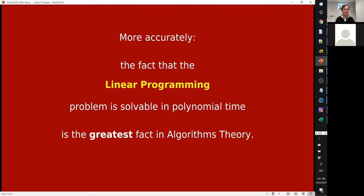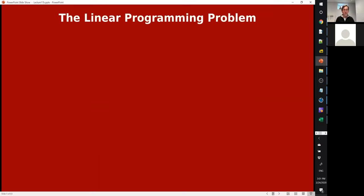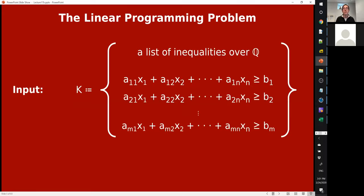What is the linear programming problem? The input to the linear programming problem is a list of inequalities. When you're solving a system of linear equations, you have a list of equations in variables x₁ through xₙ. Here we have a list of inequalities in n variables and m unknowns. You can think of everything happening over the reals, but since you're supposed to be given this as input to a digital computer, we assume that the coefficients—the a's and b's—are all rational numbers represented as pairs of integers: numerator and denominator.